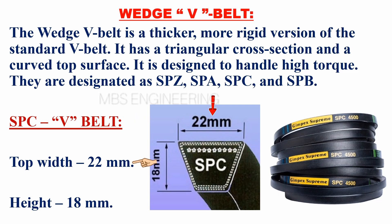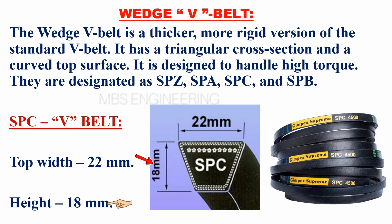The top width of the SPC V-belt is 22 millimeters. The height of the SPC V-belt is 18 millimeters. Please take a look at the figure that shows the SPC V-belt.